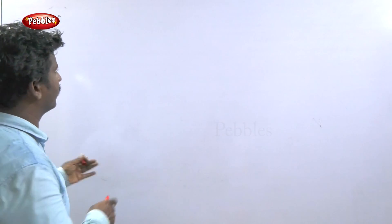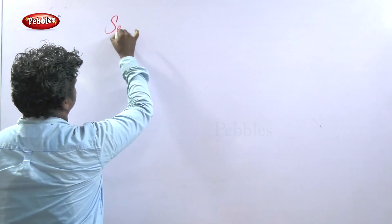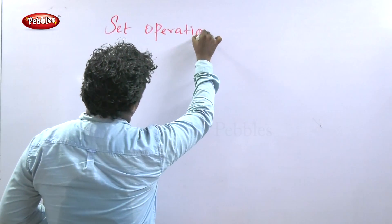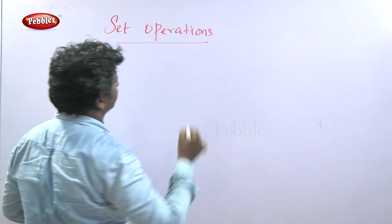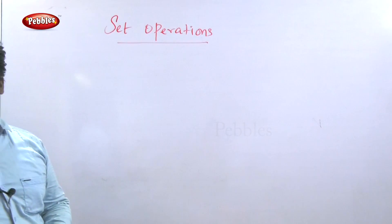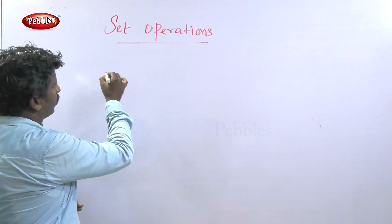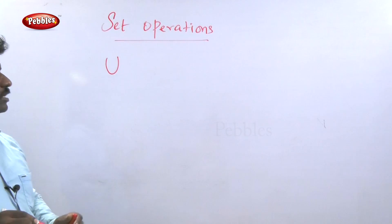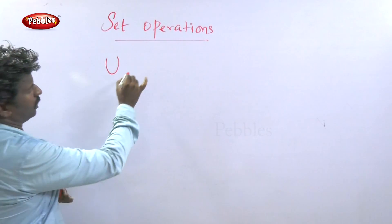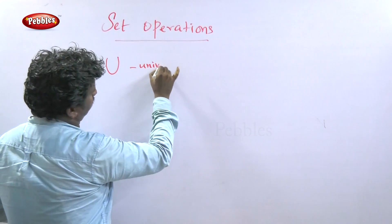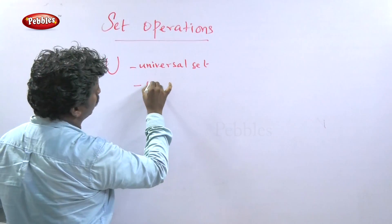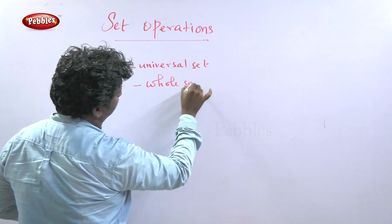The next topic is set operations. What are the set operations? We know very well this is the universal set. What is the universal set? The universal set is the whole set that holds all elements.